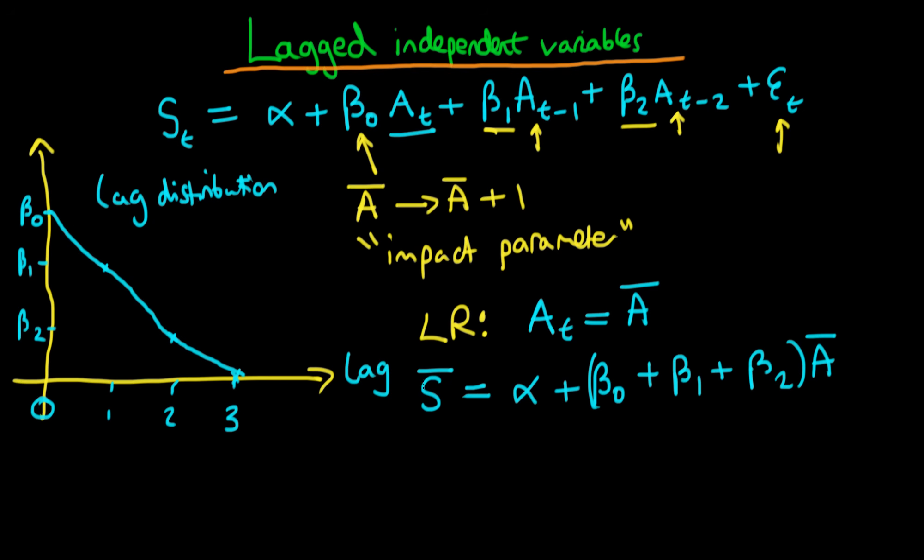Okay, so this is the long-run relationship between the level of advertising and the level of sales. What then happens if we let advertising increase, so we let advertising go from A bar to A bar plus 1? Well, if that happens then the idea here is that the new level of sales is equal to alpha plus beta naught plus beta 1 plus beta 2.